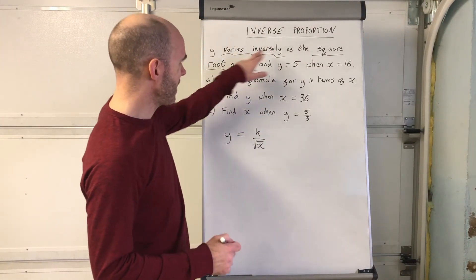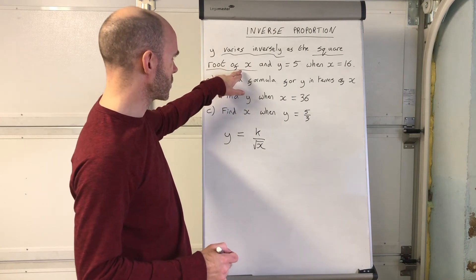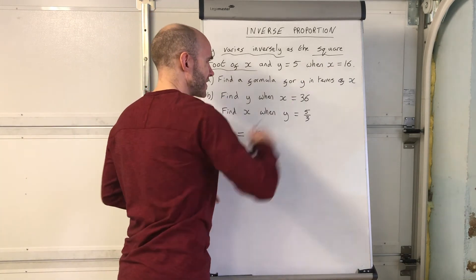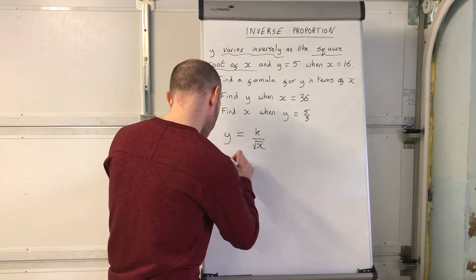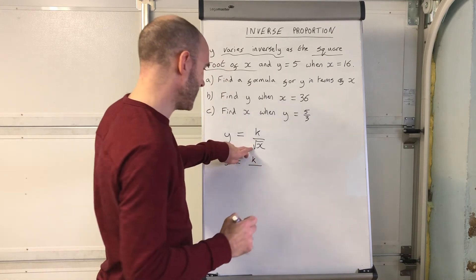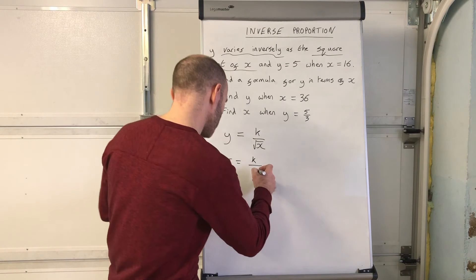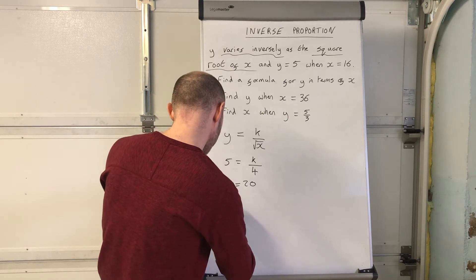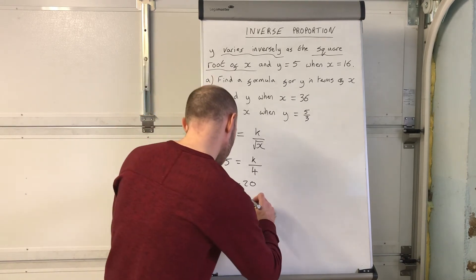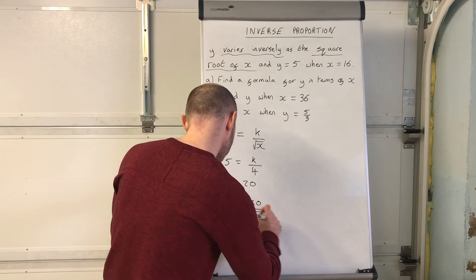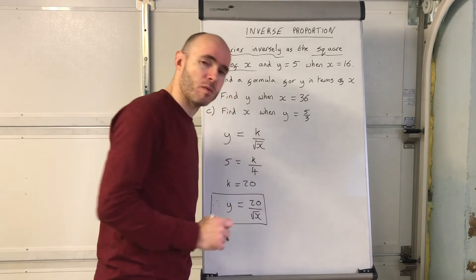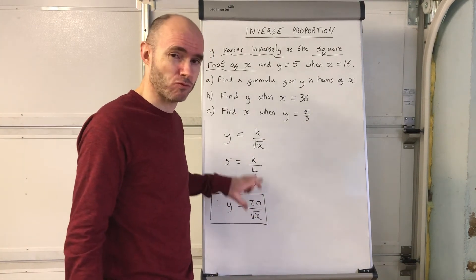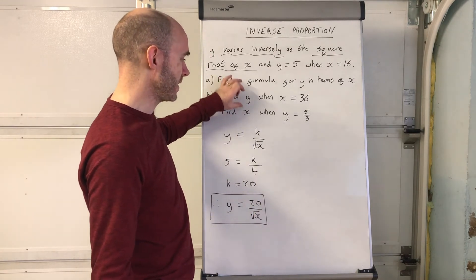Continuing with y equals k over root x — put the numbers in: x equals 16, y equals 5. So 5 equals k over the square root of 16. The square root of 16 is 4, so k equals 5 times 4 equals 20. Therefore the formula is y equals 20 over square root of x. It's important to get this formula correct because everything else depends on it.